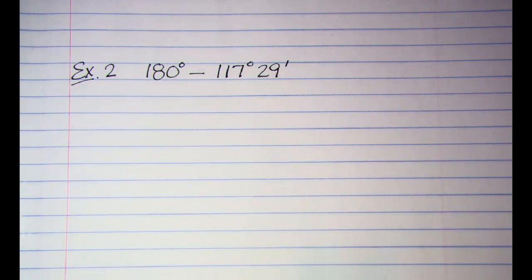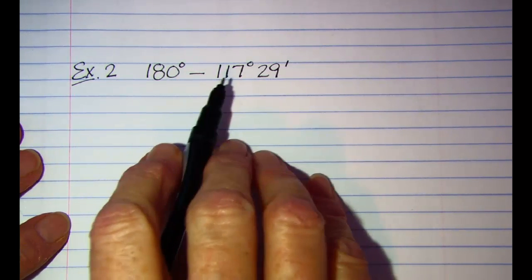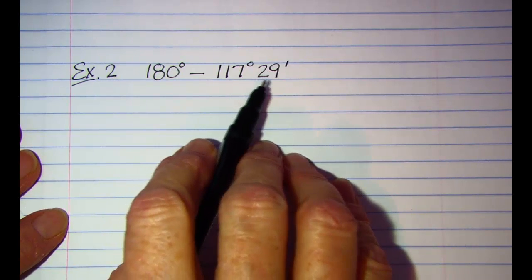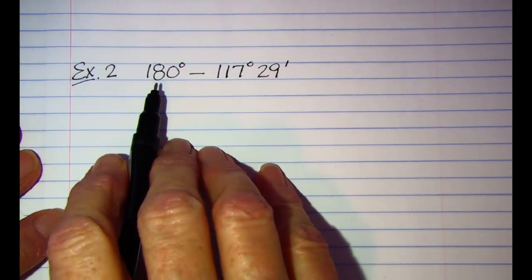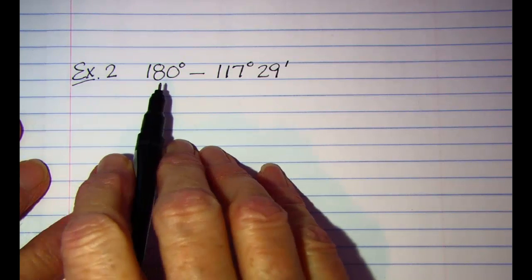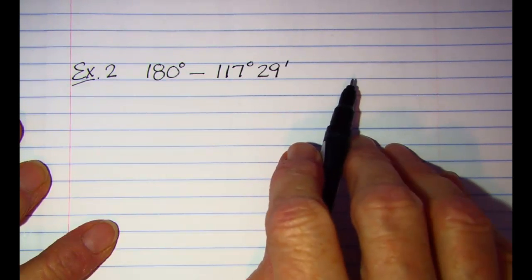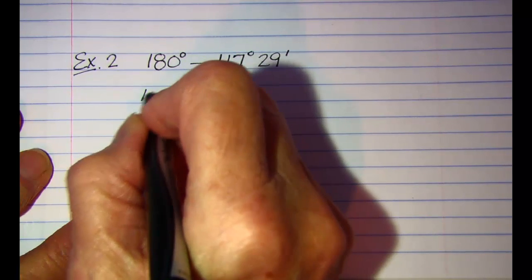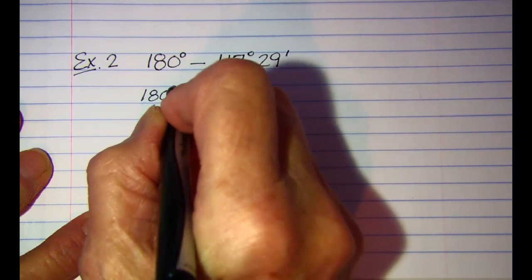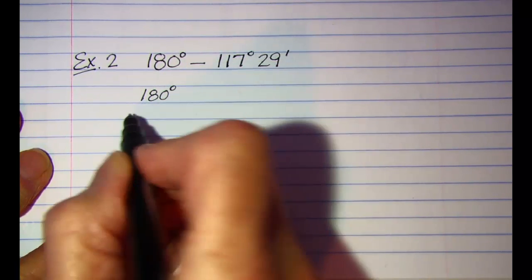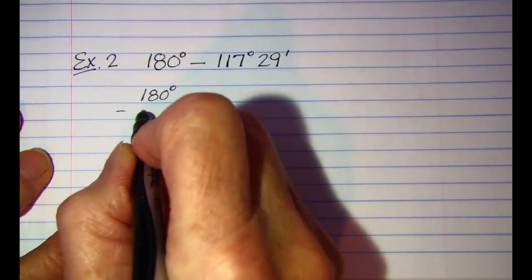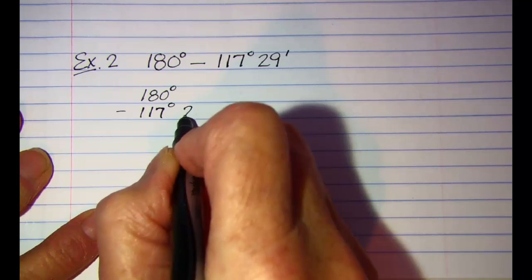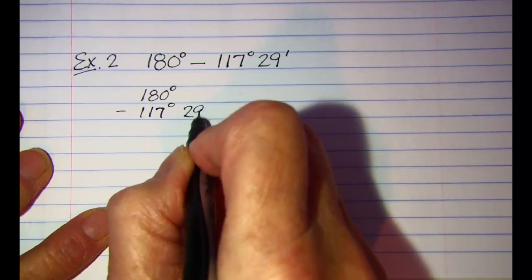The next example is subtracting 117 degrees 29 minutes from 180 degrees. I'm going to rewrite this vertically: 180 degrees minus 117 degrees 29 minutes.